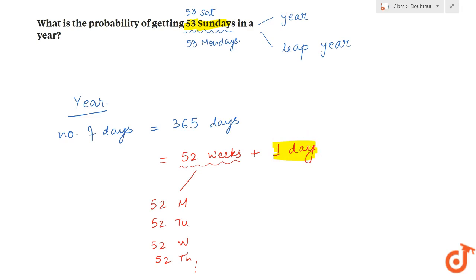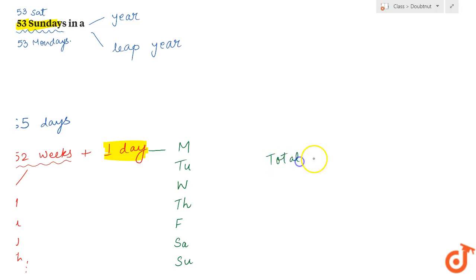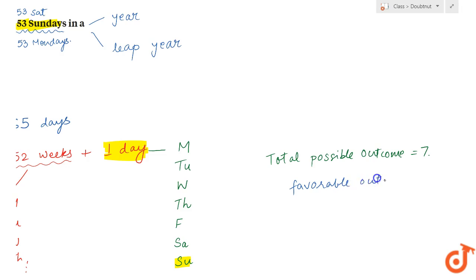That one remaining day could be Monday, or it could be Tuesday, or Wednesday, or Thursday, or Friday, or Saturday, or Sunday. That one day could be one of these seven. So the total possible outcomes for that one day is equal to seven. But we want 53 Sundays, so the favorable outcome is just one. Therefore, probability of getting 53 Sundays in a regular year is equal to 1 out of 7.